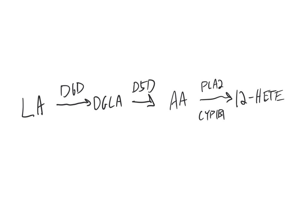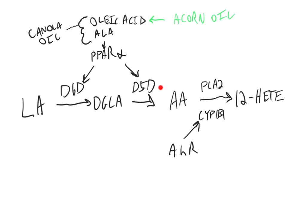Linoleic acid is the omega-6 fat found in soybean oil, safflower oil, and sunflower oil. What happens is this linoleic acid gets converted through an enzyme called D6D (delta-6 desaturase), which puts a third unsaturated bond into the linoleic acid, converting it via an intermediate ultimately to DGLA. Then another enzyme called D5D comes along and converts it to arachidonic acid. The arachidonic acid can ultimately be converted via PLA2, which releases it from the membranes, and the enzyme CYP1B1 can oxidize it—once PLA2 has released it from the membrane, this thing can oxidize it and it becomes 12-HETE, among dozens or hundreds of other potential oxidized lipids.